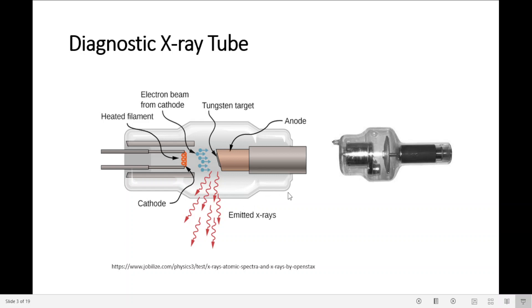The tube consists of a glass envelope that we can see right here that has been evacuated to high vacuum. That is to avoid electrons interaction with air before hitting the target.